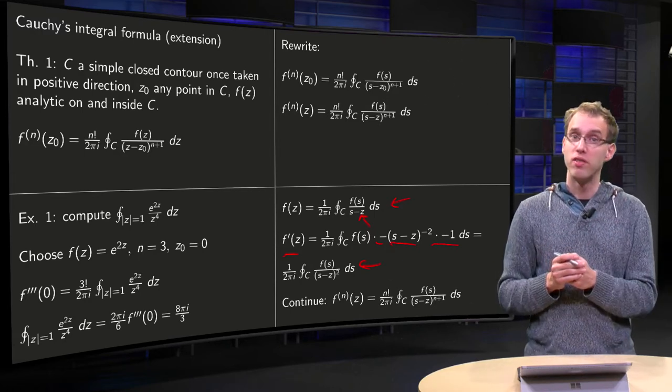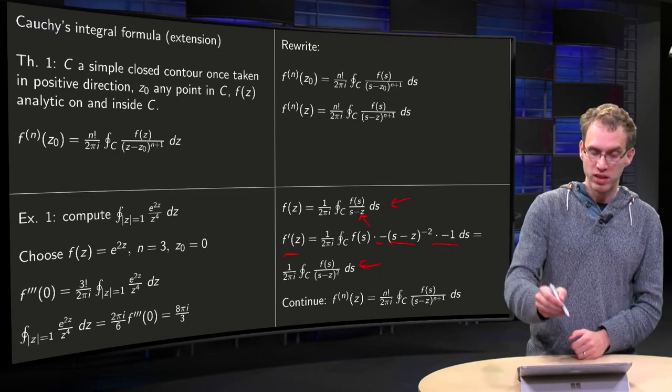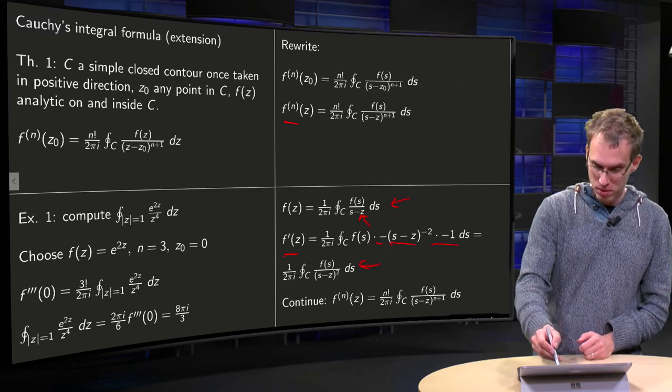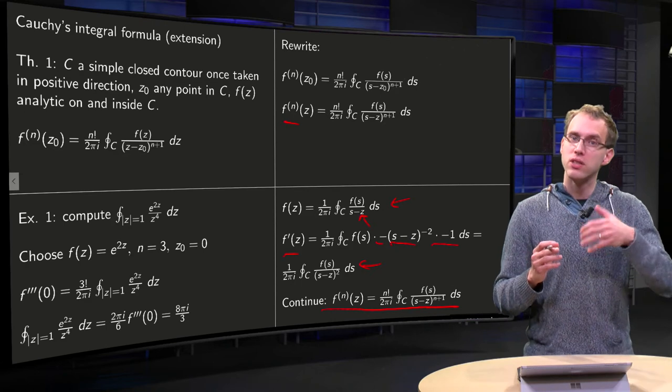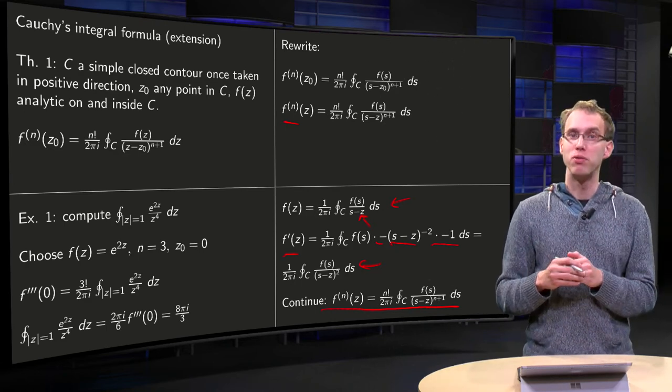which is Cauchy's integral formula with n equals 1, and if you continue it like this, you can find a generalized version of Cauchy's integral formula. So, which is over here, so this is a kind of sloppy way to prove it.